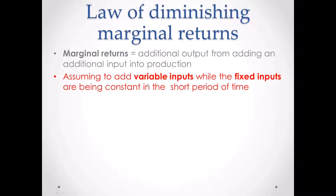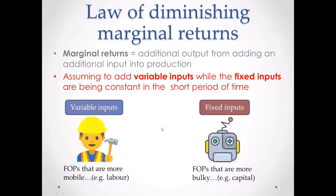Because we are talking about a short period of time, the timing here is very important. So if you don't know what variable inputs and fixed inputs are — variable inputs are factors of production that are more mobile and flexible, like labor, which can be easily recruited. Fixed inputs are something more bulky and immobile, like big machines, robots, and factories.